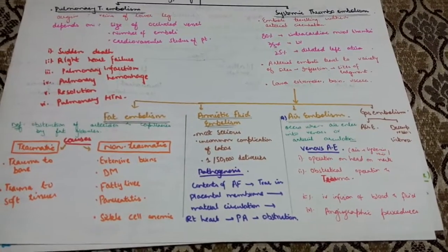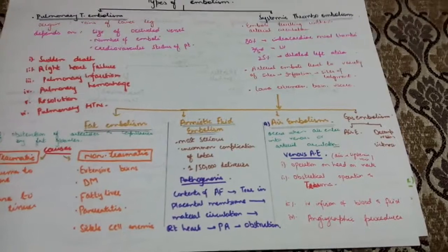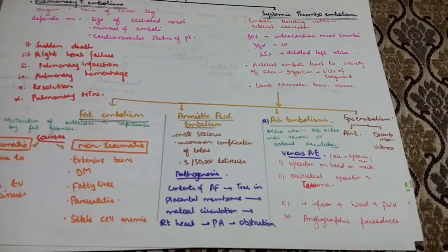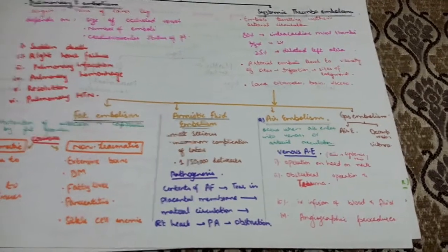Types of systemic thromboembolism include fat embolism, amniotic fluid embolism, and air embolism. Gas embolism has two types: air embolism and decompression sickness. We will discuss both.